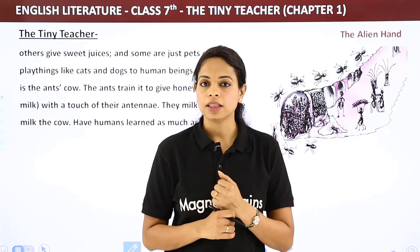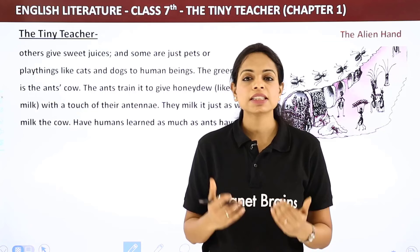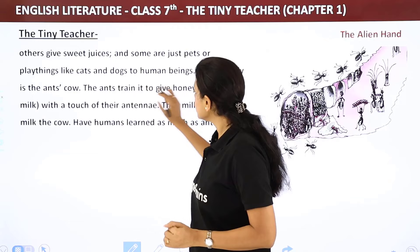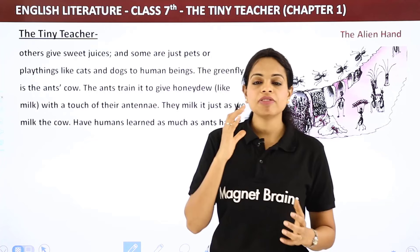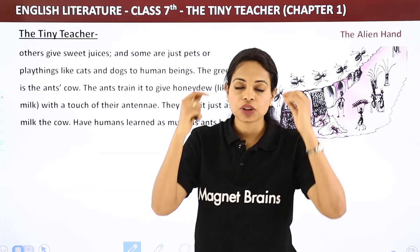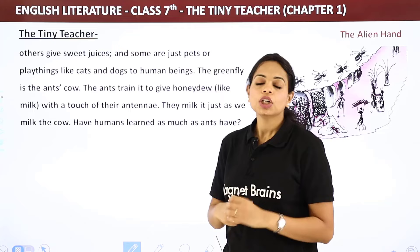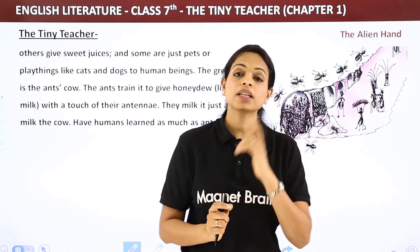The green fly is the ants' cow. Just as a cow gives us milk, the green fly gives ants honey dew, which is almost like milk. The ants train the green fly to give honey dew, and with a touch of their antenna, they receive it — they milk the green fly just as we milk the cow.